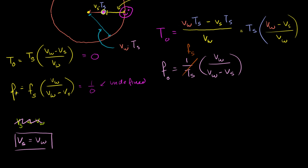But if you think about what the frequency approaches as the velocity of the source approaches the velocity of the wave — if the source velocity is only a little bit less, the denominator becomes a very, very small positive number. When you divide by that, the frequency approaches infinity. So the frequency is undefined exactly at the wave velocity, but it approaches infinity as the source approaches that speed.